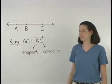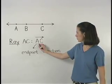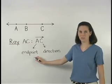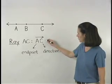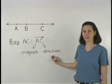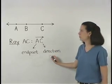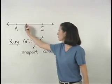When representing a ray, note that the first letter used is always the endpoint, which in this case is A. And the second letter used always indicates the direction, which in this case is toward point C.